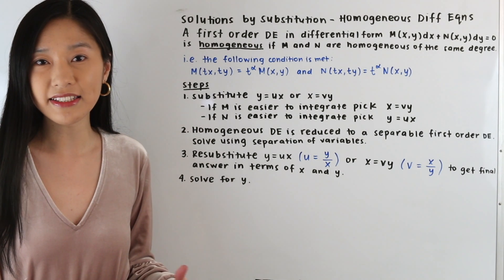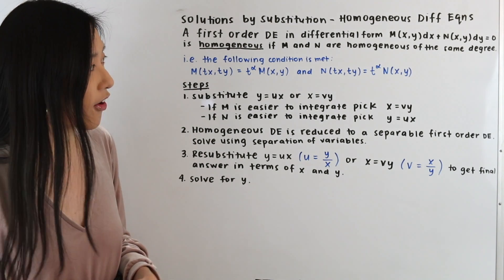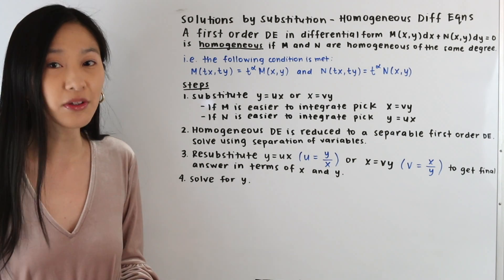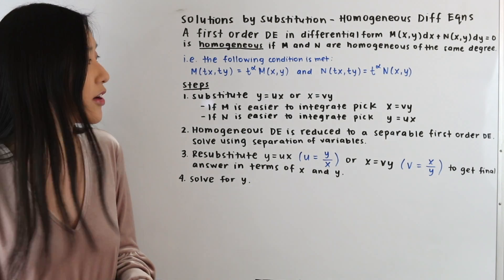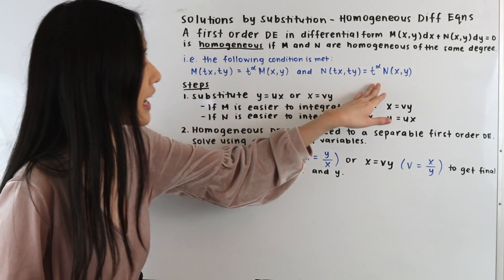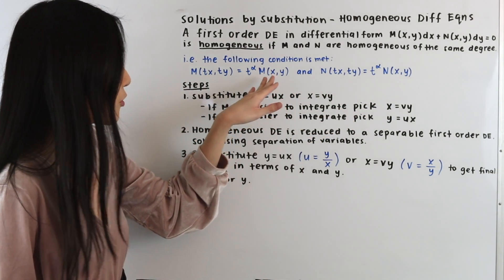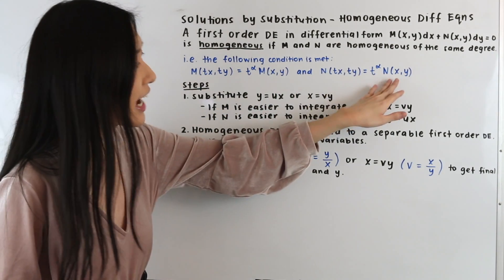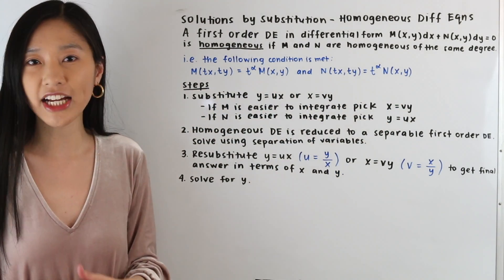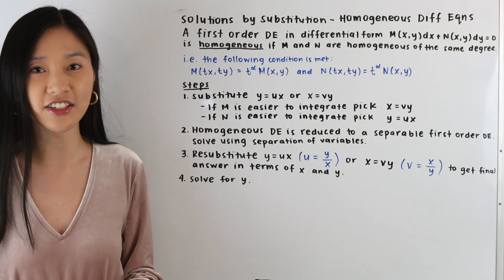All this means is that when we're checking if the functions M and N are homogeneous, and we plug in tx for x and ty for y, we get that when we factor out the t to the alpha, we get the original functions back — both for the M function and for the N function. If you don't know what I'm talking about, check out my video on how to determine if a function is homogeneous.